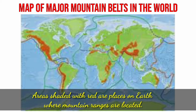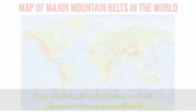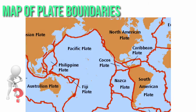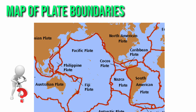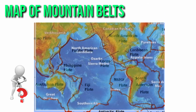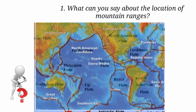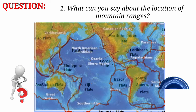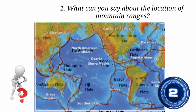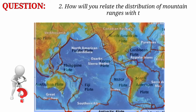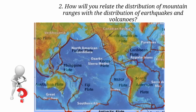Areas shaded with red are places on Earth where mountain ranges are located. What do you notice? Before we discuss this, let's ponder on a simple activity. Let's have the map of the lithospheric plates and place the map of the major mountain belts on it. Study the map carefully and answer the following questions: Number 1, what can you say about the location of the mountain ranges? And number 2, how will you relate the distribution of mountain ranges with the distribution of earthquakes and volcanoes?